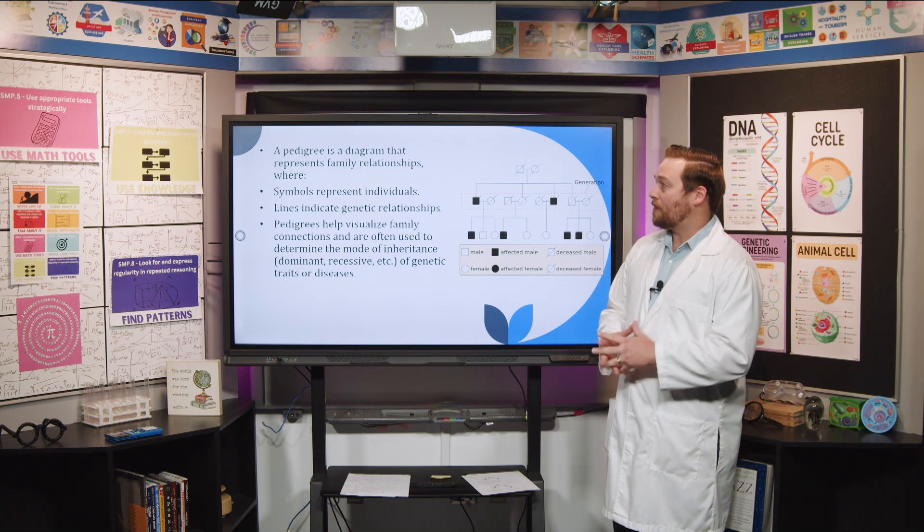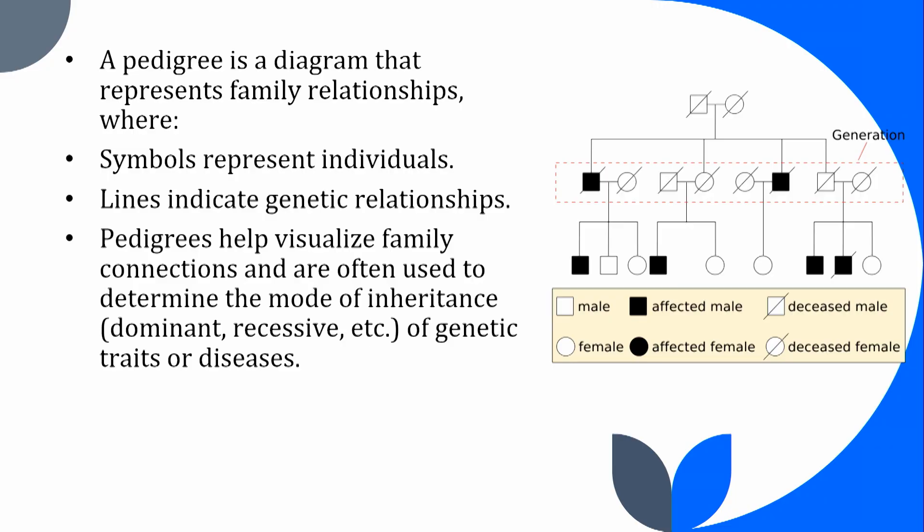A pedigree is a diagram that represents family relationships. The symbols represent the individuals and the lines indicate the genetic relationships. Pedigrees help visualize family connections and are often used to determine the mode of inheritance — whether it's dominant, recessive, or a different type — and also to track genetic traits or disorders.